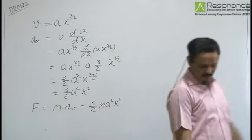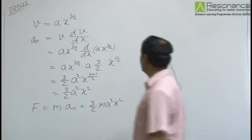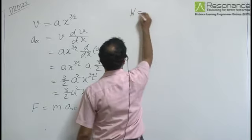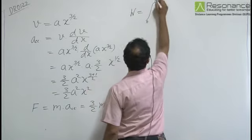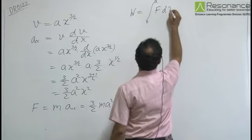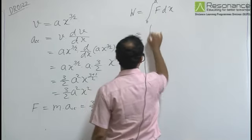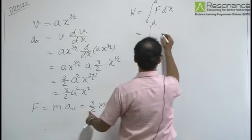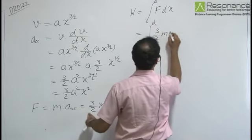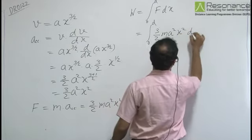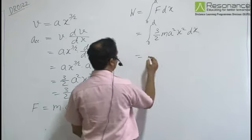The work done during the displacement from 0 to D is W equals the integral from 0 to D of F·dX, which is the integral from 0 to D of 3/2 MA² X² dX.